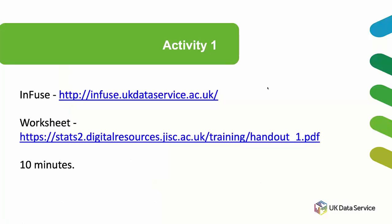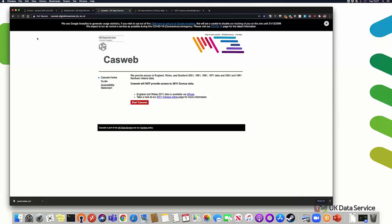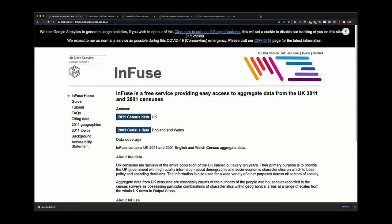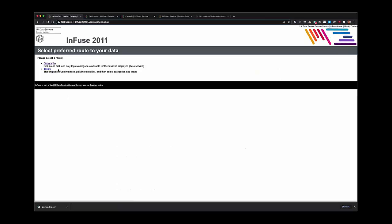We've got an activity for you now. In a web browser, go to Infuse at the web address shown, and before you do that, download the worksheet from the address here. This should take about 10 minutes. I'll just go and show you Infuse first. So I'm now showing this - this is Infuse. Topics - the amount of topics available. If you pick topics first it will limit the geography available to you.